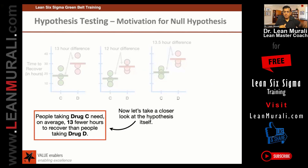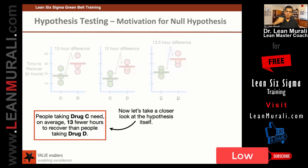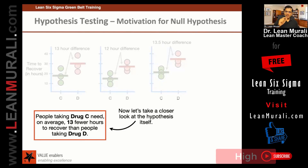Later on we are going to say, based on the p-value — and the p-value I am going to declare as 0.05 — if the p-value is low, the null hypothesis goes, and if the p-value is high, that is greater than 0.05, the null is the one we keep.